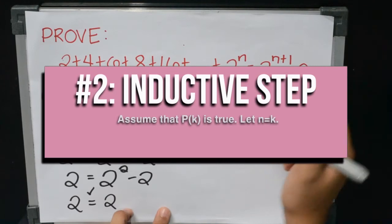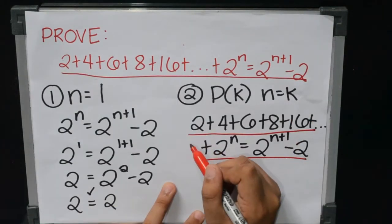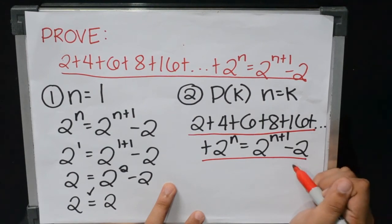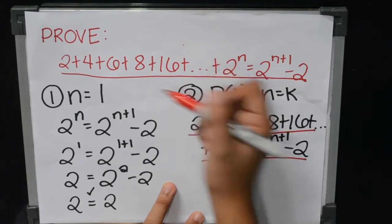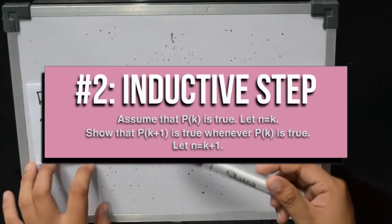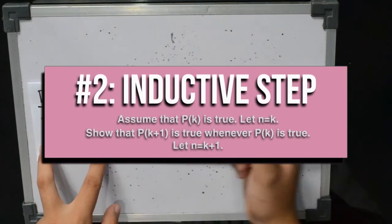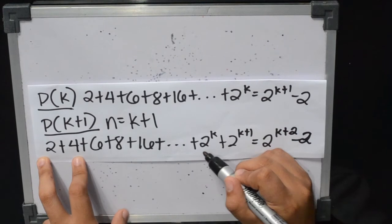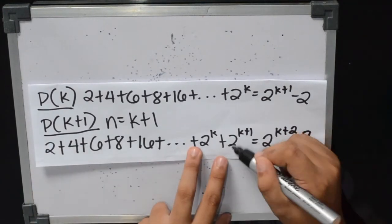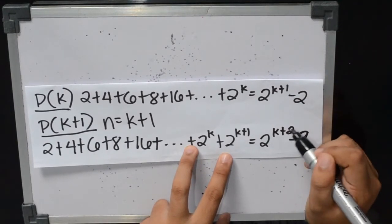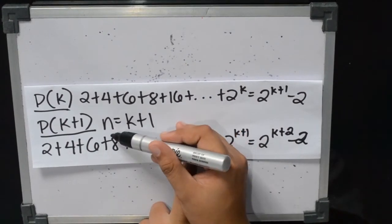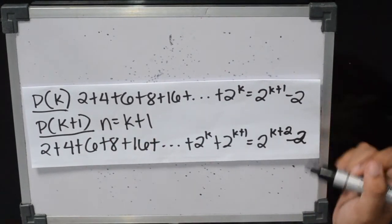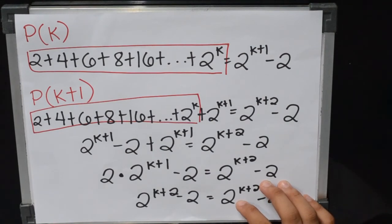Again, we assume that P(k) is true and let n equal k. So the equation becomes 2 plus 4 plus 6 plus 8 plus ... plus 2^k equals 2^(k+1) minus 2. For the second part of the inductive step, we show that P(k+1) is true whenever P(k) is true by letting n equal k+1. That makes the equation 2 plus 4 plus 6 plus 8 plus ... plus 2^k plus 2^(k+1) equals 2^(k+2) minus 2, where 2^(n+1) becomes 2^(k+2) after substituting n with k+1. Since this is 2^(n+1), it becomes 2^(k+2), so the premise is true by making both sides of the equation equal or identical.